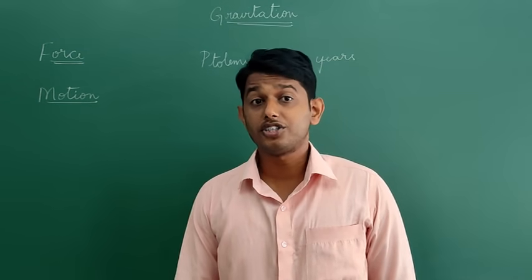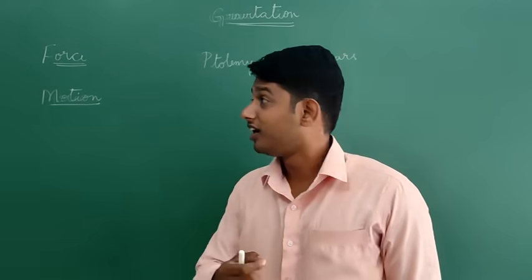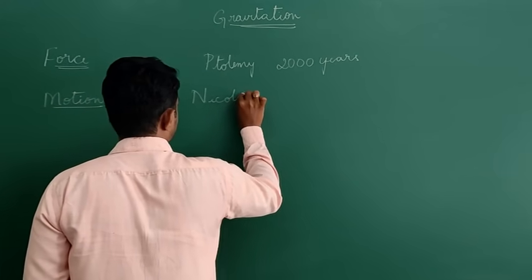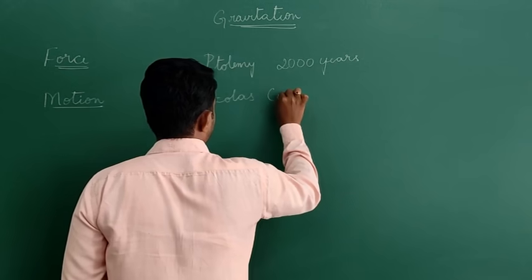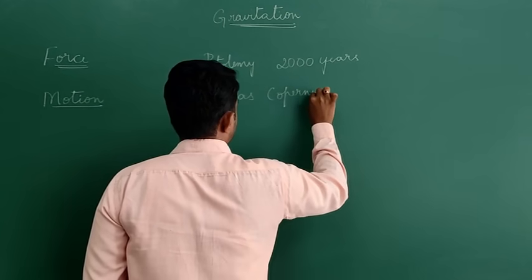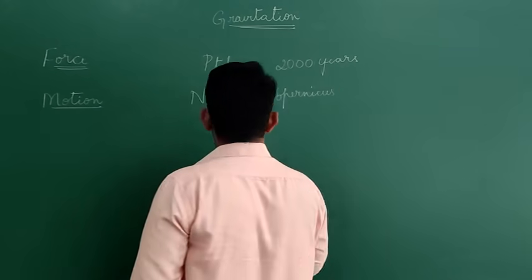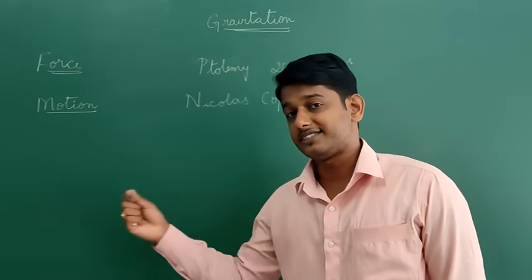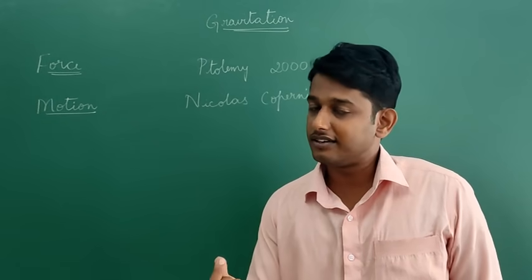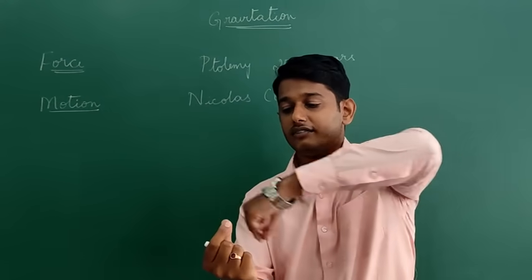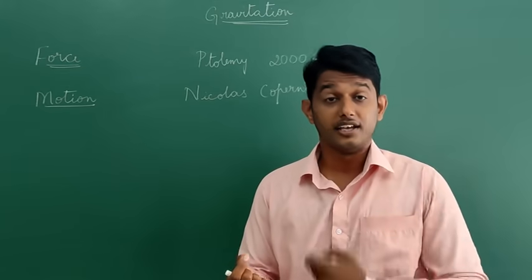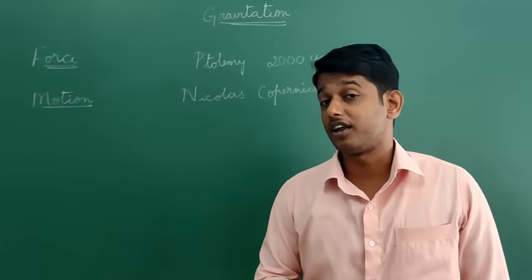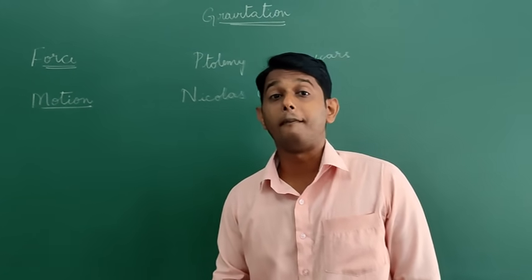Next, a Polish monk named Nicholas Copernicus proposed the heliocentric model. Helio means sun, which says that the sun is at the center and all the planets revolve around the sun. This heliocentric model was proposed by Nicholas Copernicus, who was a Polish monk from Poland.